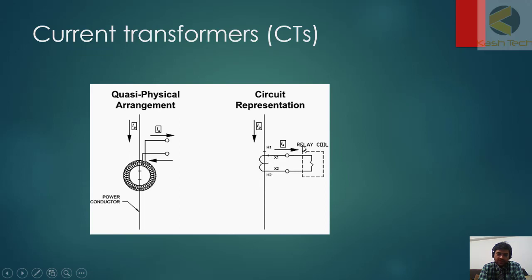So current is coming and it's leaving here. If dot is here, the current will be, its current is leaving here. Then it will also enter into this, it's vice versa.